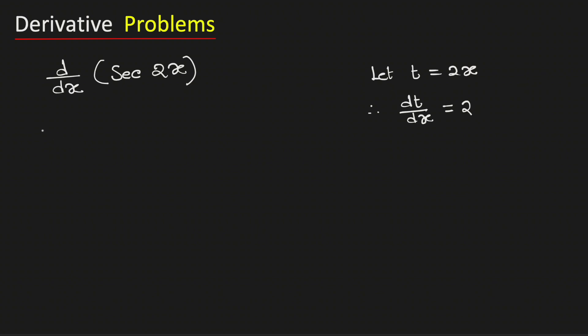Now if we put the value of t, sec 2x will be equal to sec t. This is a function of t so we will take its derivative with respect to t.